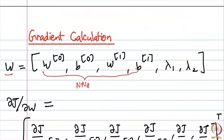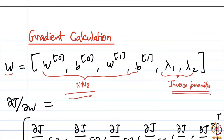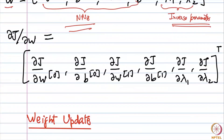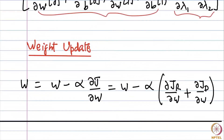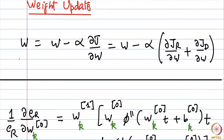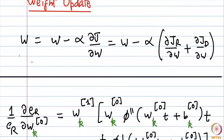Notice the parameter set now includes the neural network weights and also the inverse parameters λ₁ and λ₂. This is a very neat idea — if you are already solving for a thousand weights, you simply add a few more inverse parameters. The derivatives ∂J/∂w can be calculated by standard backpropagation.